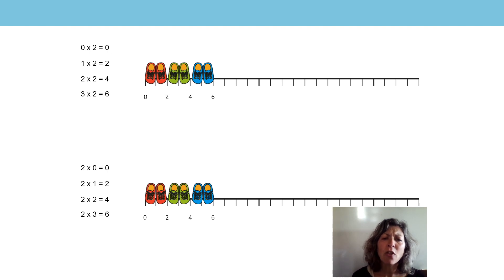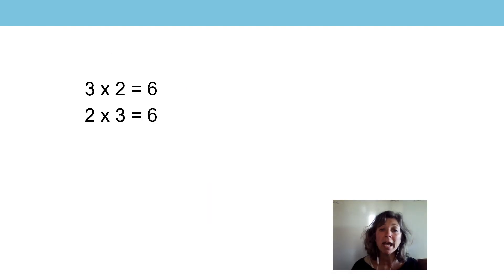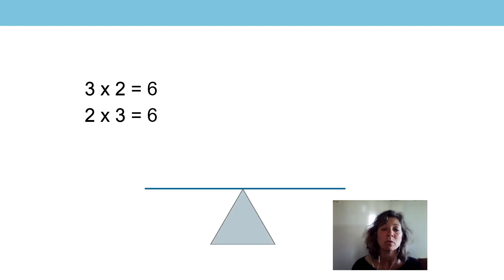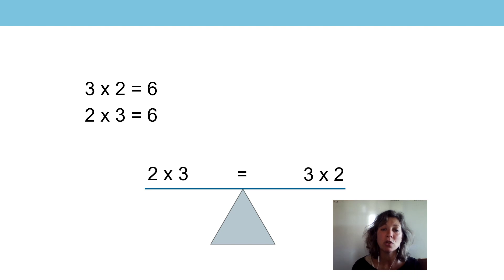Can you see that three twos and two three times are in the same place on the number line? We're now going to use the equal sign to show that three twos are equal to two three times. They both have the same product and we've just seen that they both have the same value on the number line. Three twos equals six and two three times equals six. We're going to use our balance image that we've used in other lessons here. Two three times is equal to three twos.